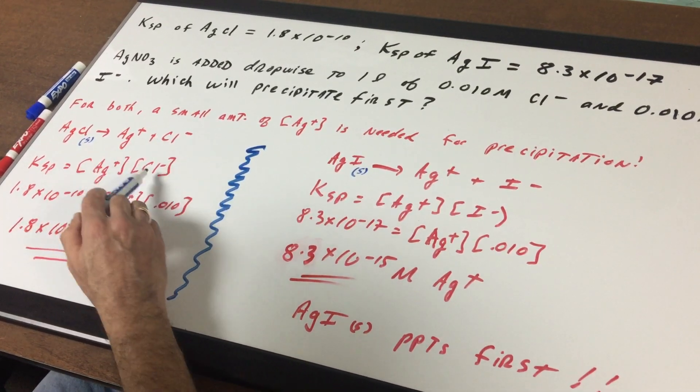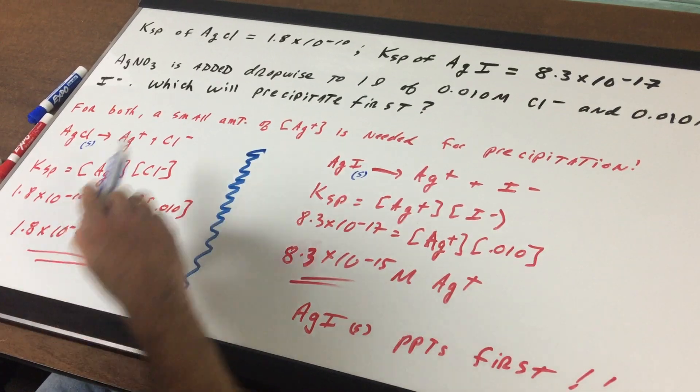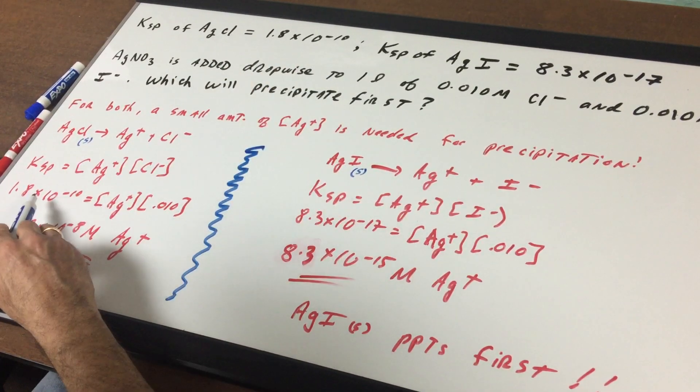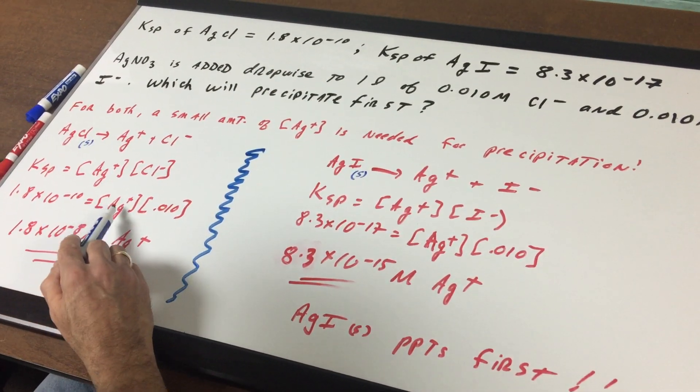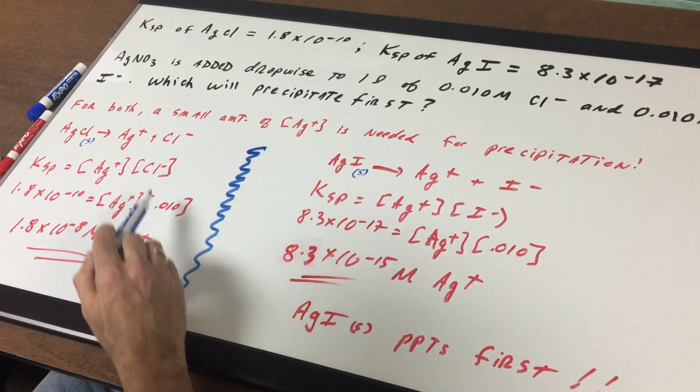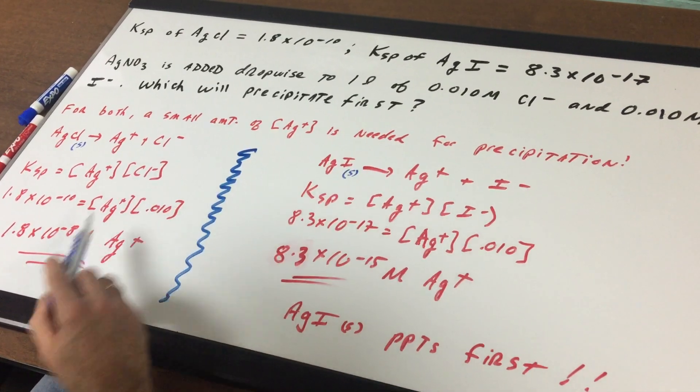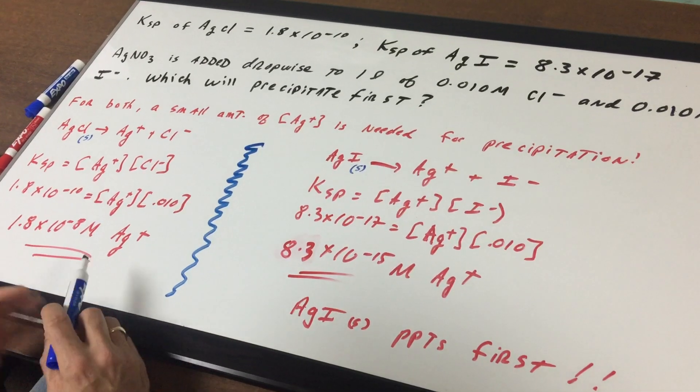So the KSP is the silver times the chloride. We know the KSP of silver chloride is 1.8 times 10^-10. We don't know the silver. We know the chloride ion is 0.10.